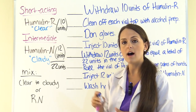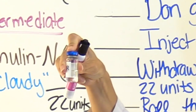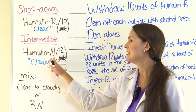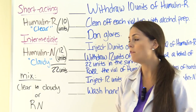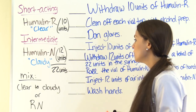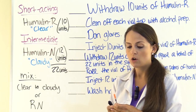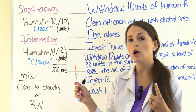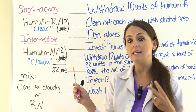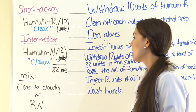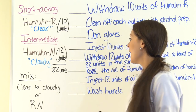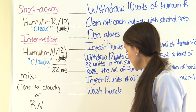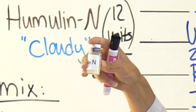When you look at the insulin in the vial, Humulin R will be clear like this. The other type of insulin you're going to give is Humulin N — specifically 12 units. So the total amount in your syringe will be 22 units of insulin: 10 of Humulin R and 12 of Humulin N. Humulin N is intermediate acting, and when you look at intermediate action insulins, they will look cloudy like this.